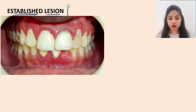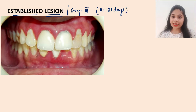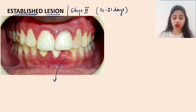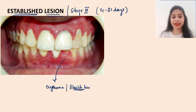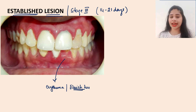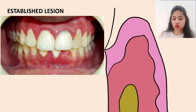The established lesion is Stage 3, occurring between 14 to 21 days of plaque accumulation. Clinically, there is a lot of erythema associated with a bluish hue — the reason for which will be explained shortly. The gingiva can also bleed profusely even with slight provocation.